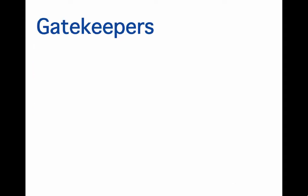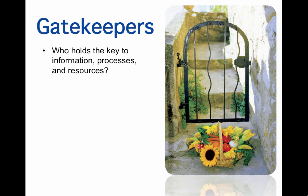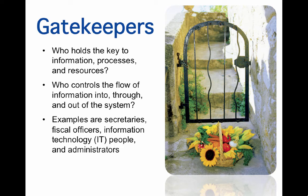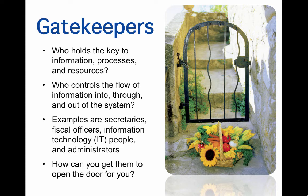Our next concept is gatekeepers. Ask yourself: who holds the key to information, processes, and resources? Who controls the flow of information into, through, and out of the system? Examples of gatekeepers are secretaries, fiscal officers, information technology people, and administrators. Ask yourself how you can get them to open the door for you. It never hurts to be grateful for the services they render. Get to be good friends with them — a box of candy doesn't hurt. Say hello to them when you come into the office. Pay attention to these people — they are very valuable.